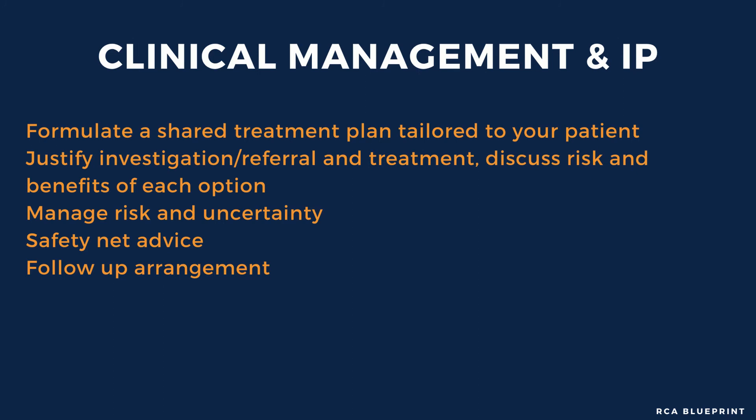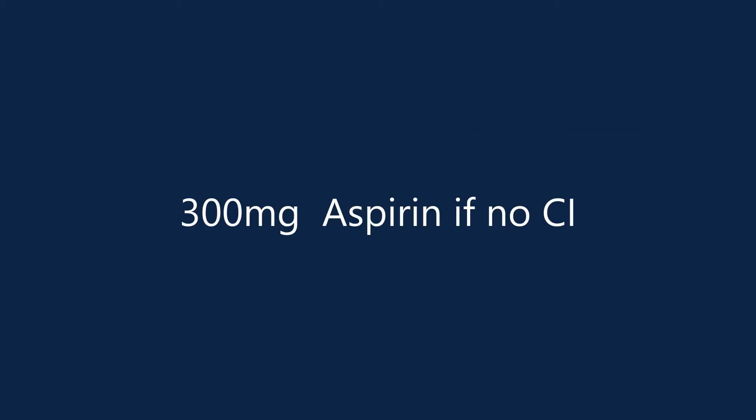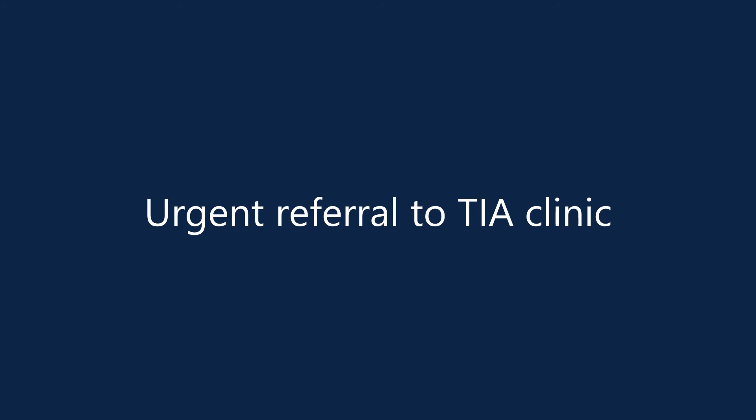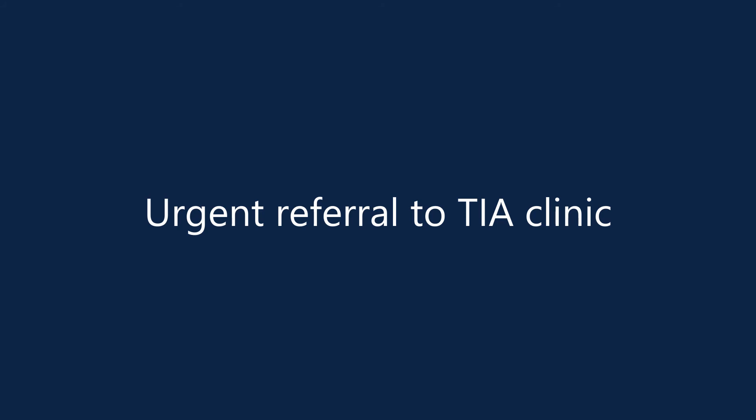Then you may want to go into how you will manage the TIA. According to NICE, a patient with suspected TIA needs to have 300 mg of aspirin until they are seen in a TIA clinic. This patient needs an urgent referral to a TIA clinic. NICE recommends not using any scoring system to determine urgency of referral — so you may have come across the ABCD2 score to assess severity, but don't use it to determine the urgency of your referral.